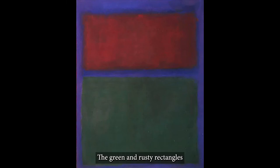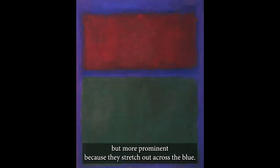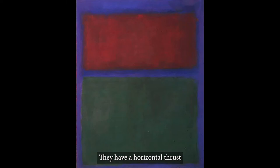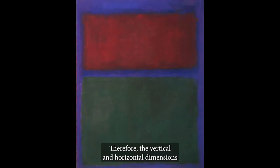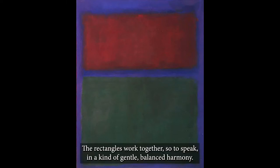The green and rusty rectangles are smaller than the blue one, but more prominent because they stretch out across the blue. They have a horizontal thrust that quiets or counterbalances the upward thrust. Therefore, the vertical and horizontal dimensions are brought together in peaceful equilibrium. The rectangles work together in a kind of gentle, balanced harmony.